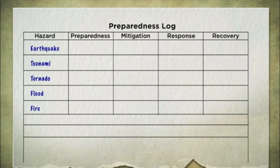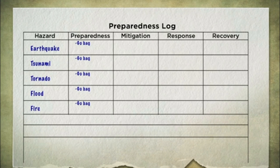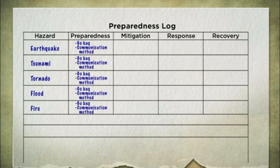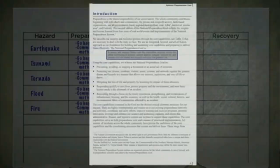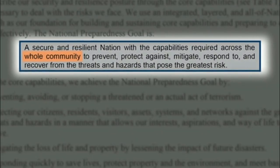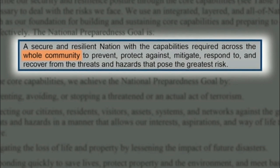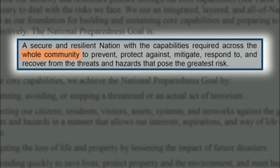You may notice that there's some overlap. For instance, the Go Bag I mentioned could be useful for an earthquake, a tsunami, or any other disaster requiring long-term evacuation of a building, so it could be listed for each hazard. Having an effective way to communicate with family is important for any and all disaster types. Make really large columns and get very, very detailed and specific.